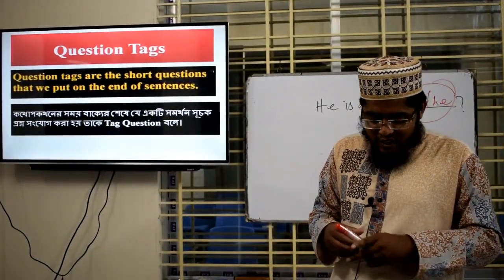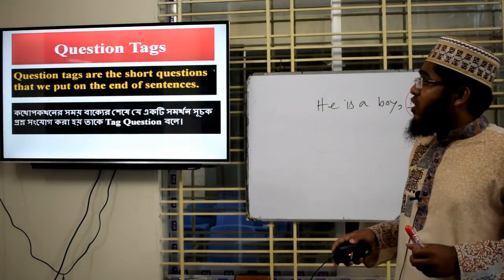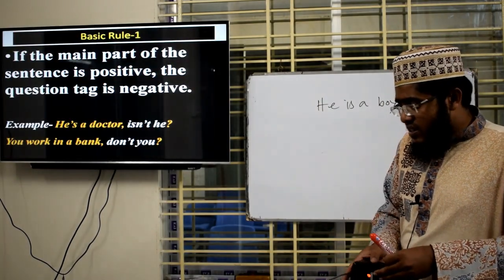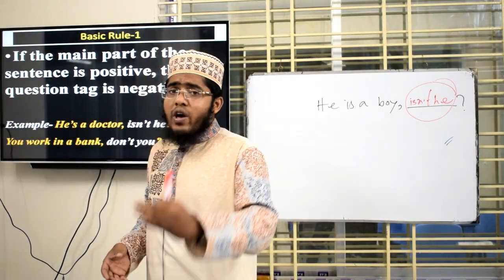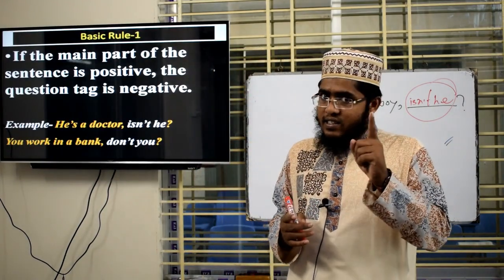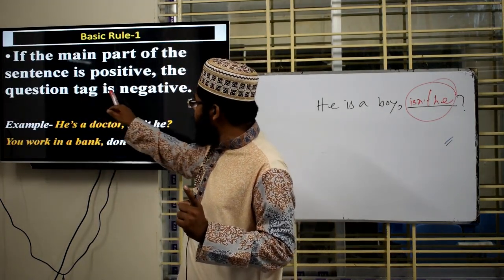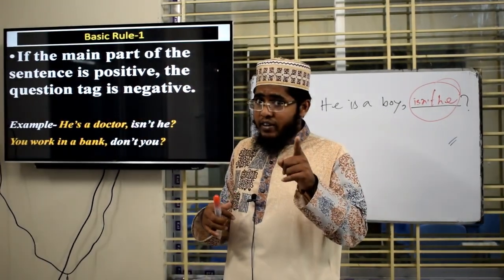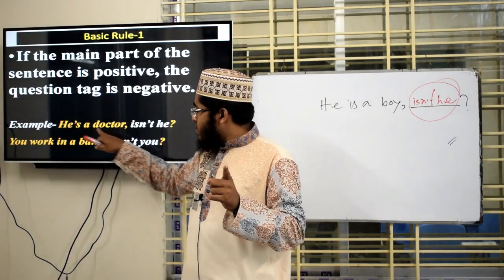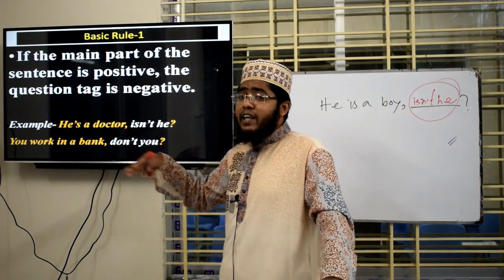Question tags have some formulas. The first formula: we have to see what the sentence is about. If the sentence is positive, we have to make the tag question negative interrogative. For example, 'He is a doctor.' The sentence is positive.